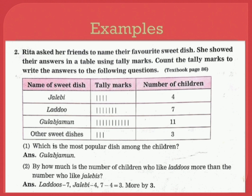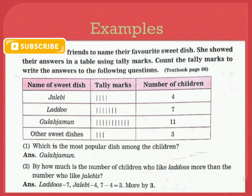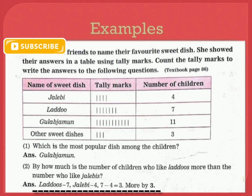Now let's answer the questions. Which is the most popular dish among the children? Gulab Jamun. By how much is the number of children who like laddus more than the number who like jalebis? Laddu 7, Jalebi 4 — 7 minus 4 equals 3, more by 3.